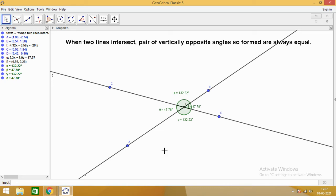Yes. When two lines intersect, we see that pair of vertically opposite angles. So here angle BEC and angle AED, they are making one pair of vertically opposite angles and we see that both the angles are equal.